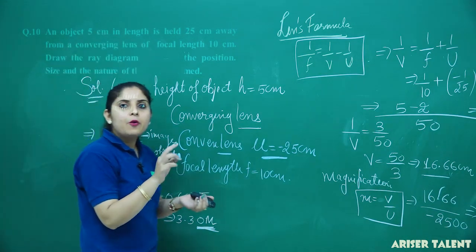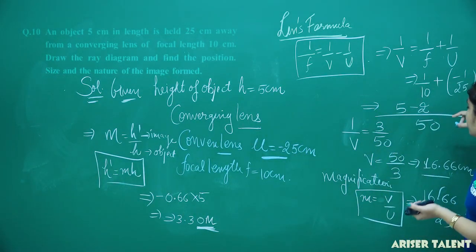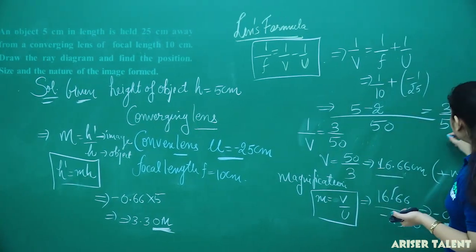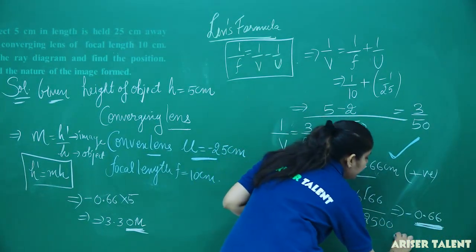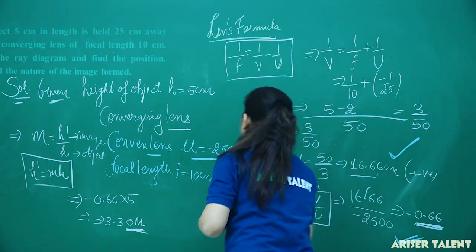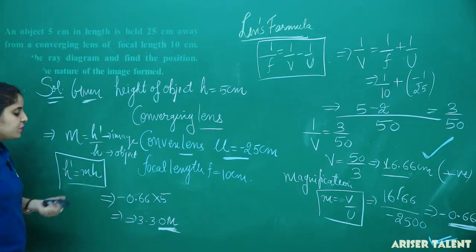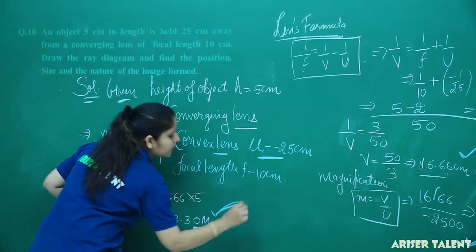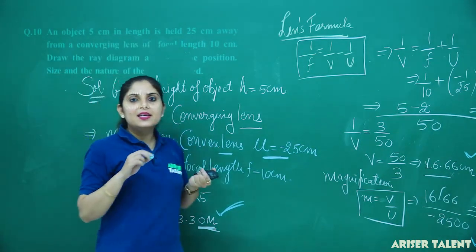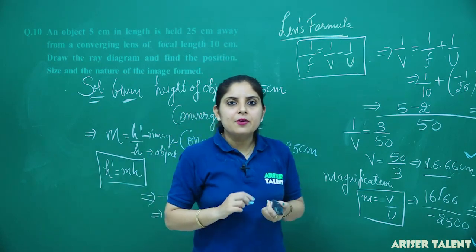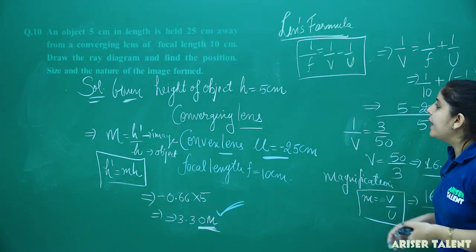So three things have been determined: firstly, the position of the image is 16.66 cm; secondly, the magnification is 0.66; and thirdly, the height of the image is 3.3 cm. Now we need to draw the ray diagram for this entire case. Just copy this part so we can draw the ray diagram.